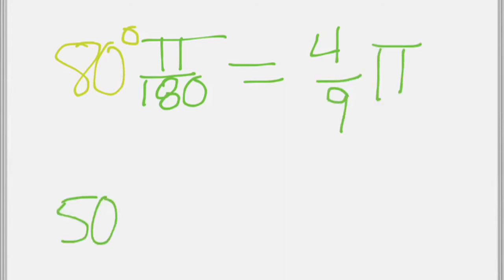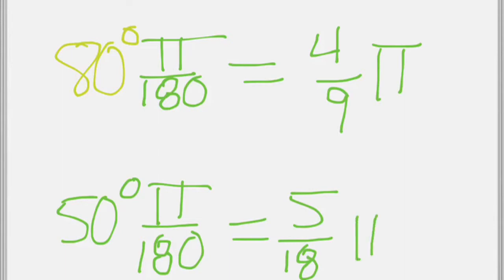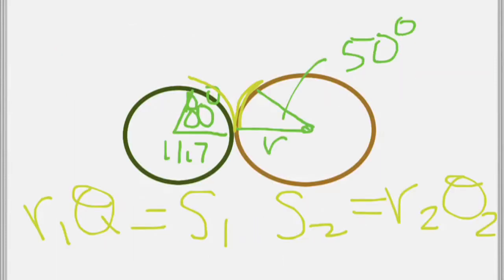And then 50 degrees. That's pi over 180 again. So that's 5 18ths pi. It's okay. Okay.